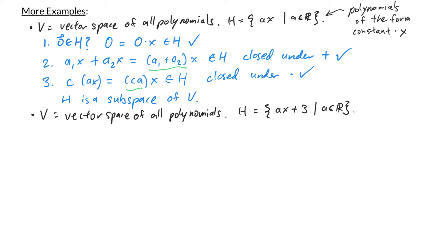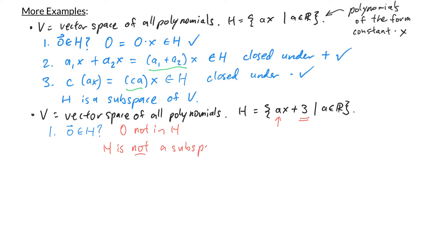In our next example, we have a slight variation. V is still the vector space of all polynomials, but H consists of polynomials of the form Ax + 3. The zero vector in the vector space of polynomials is just the constant 0. No matter what we choose for A, we're always left with the constant 3, so there's no way to get just the constant zero. The zero vector is not in H, which means H is not a subspace of V.